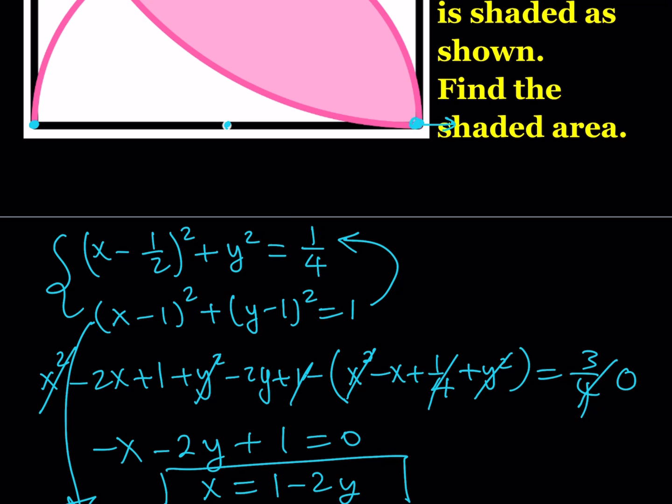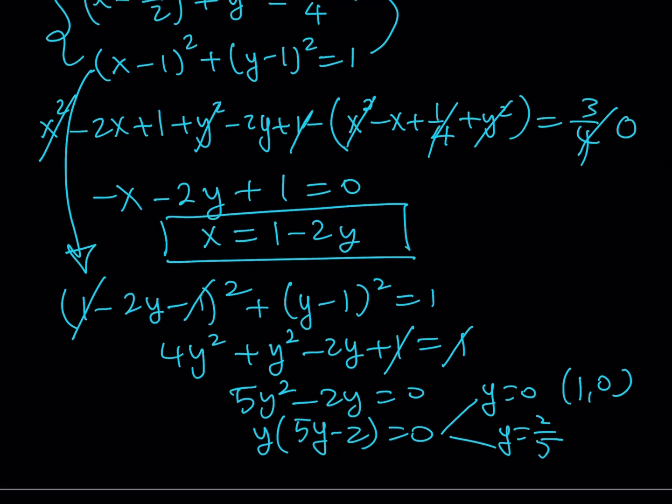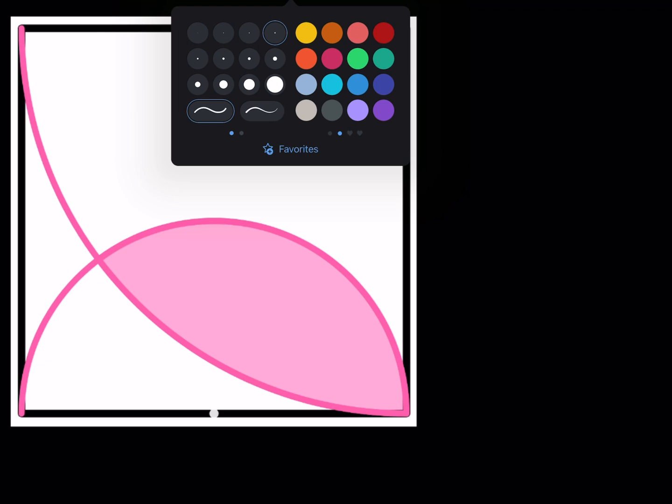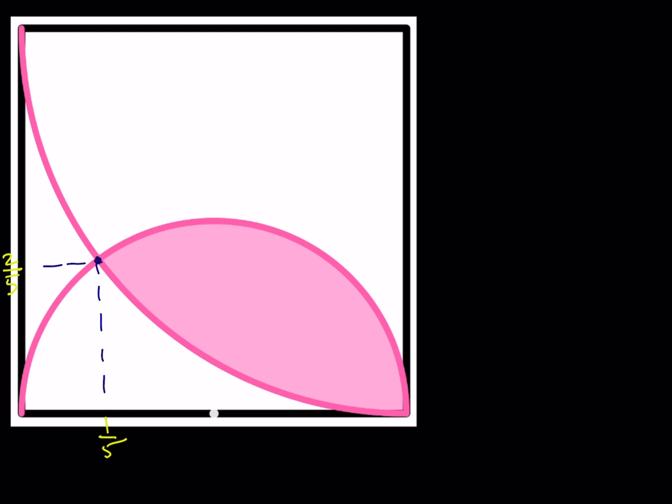y = 0 gives the trivial solution (1, 0), which we don't need. The other solution, y = 2/5, gives x = 1/5. So the intersection point we need is (1/5, 2/5). Let's go ahead and mark that on the picture — the x-coordinate is 1/5 and the y-coordinate is 2/5.